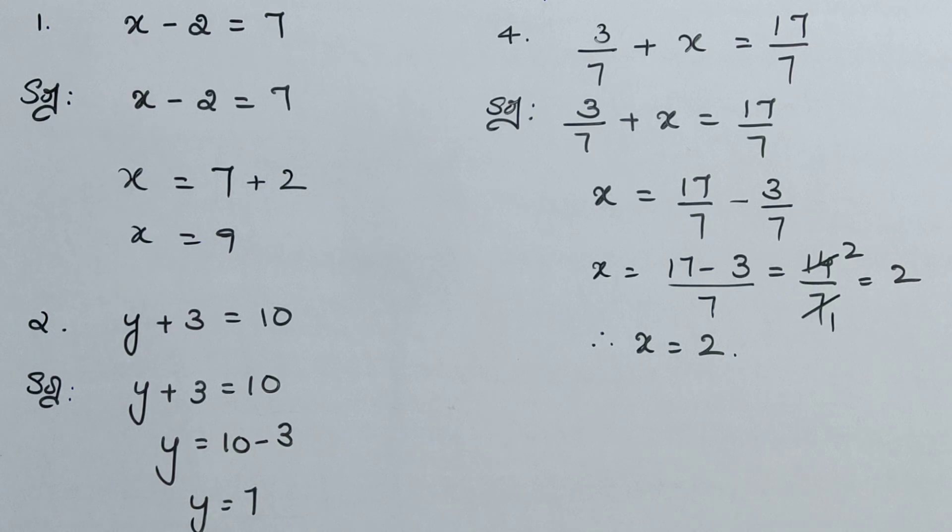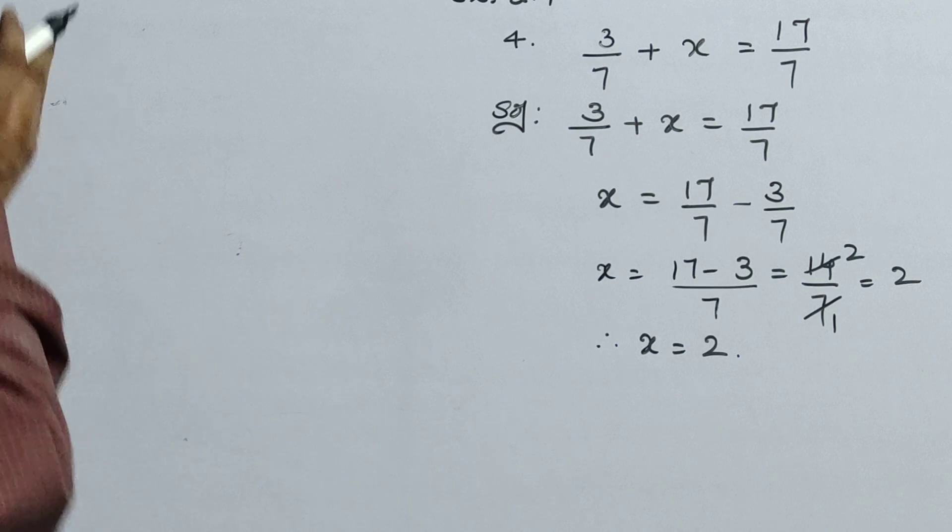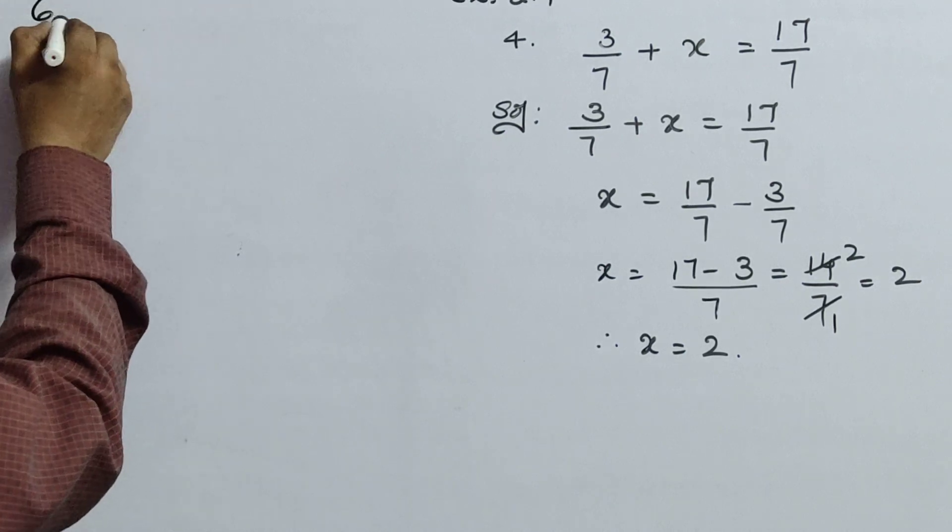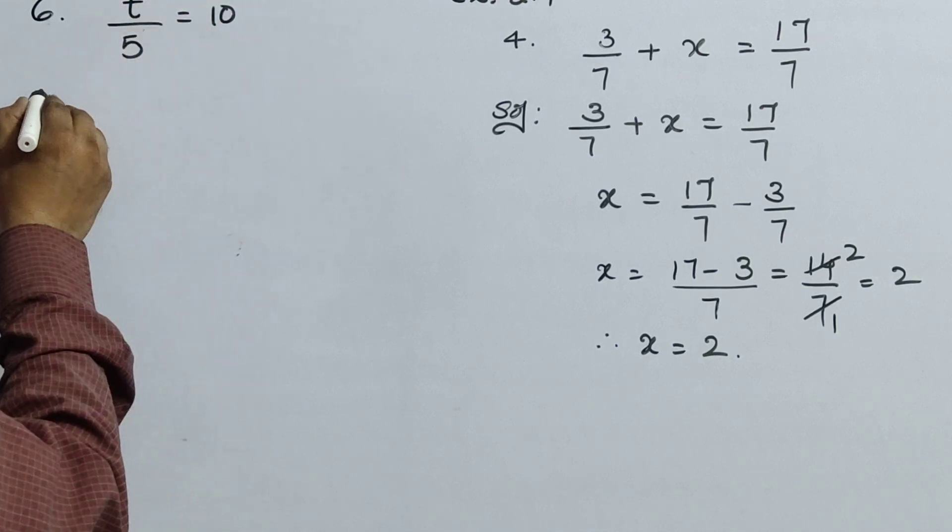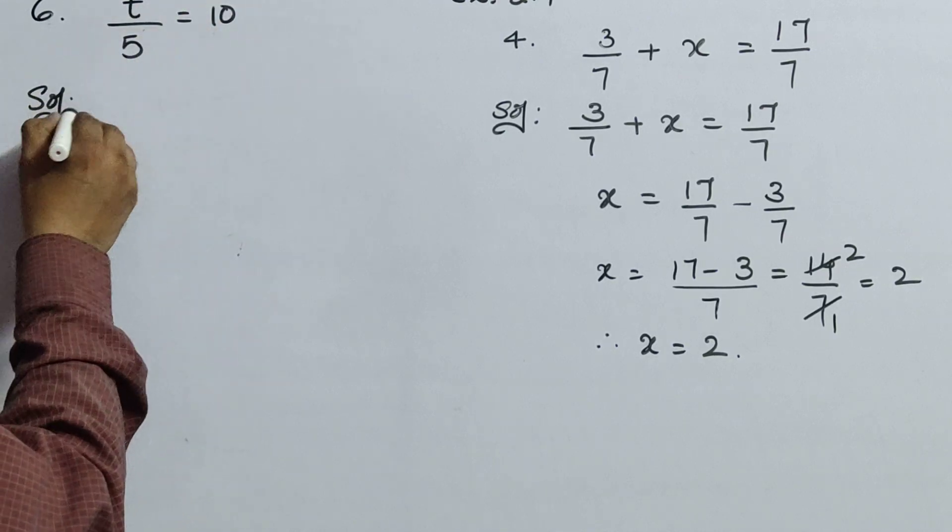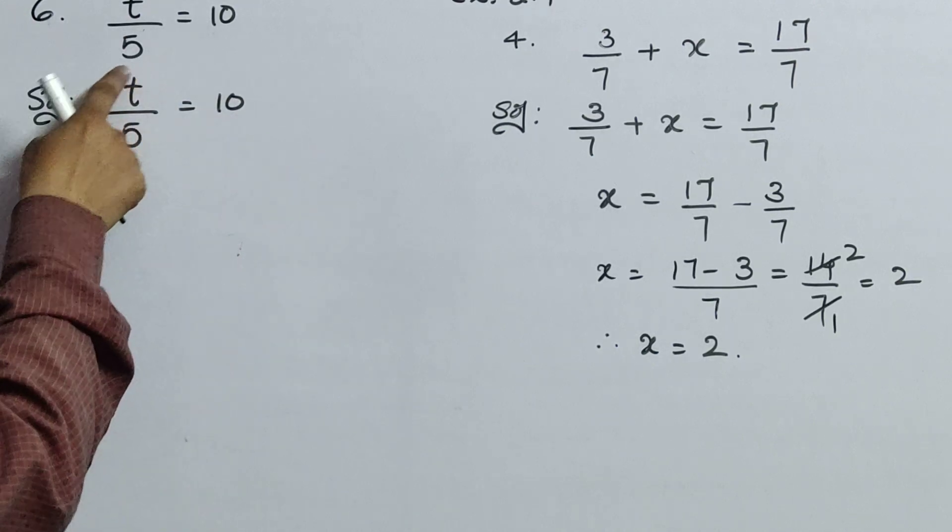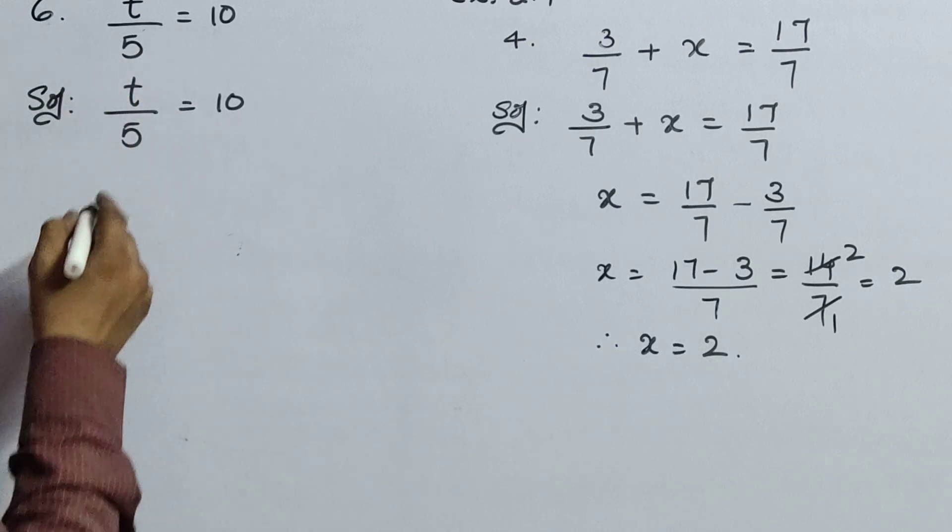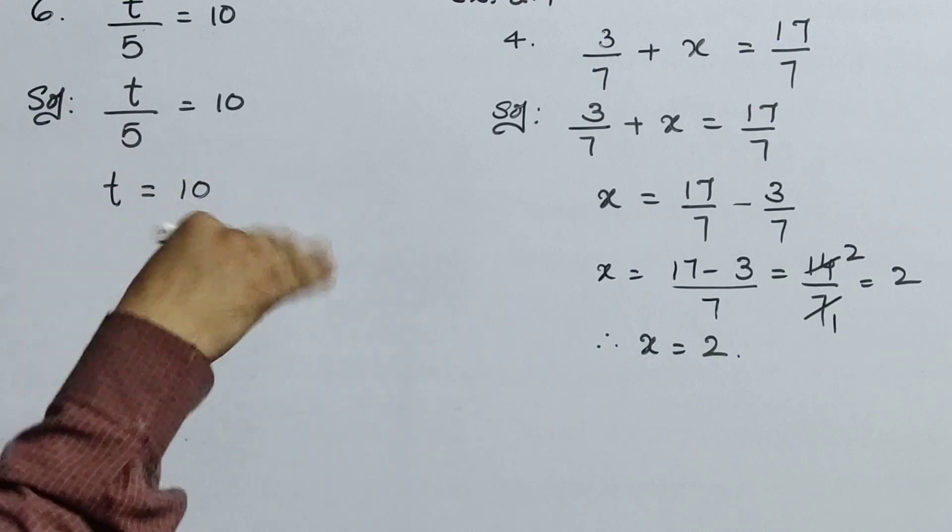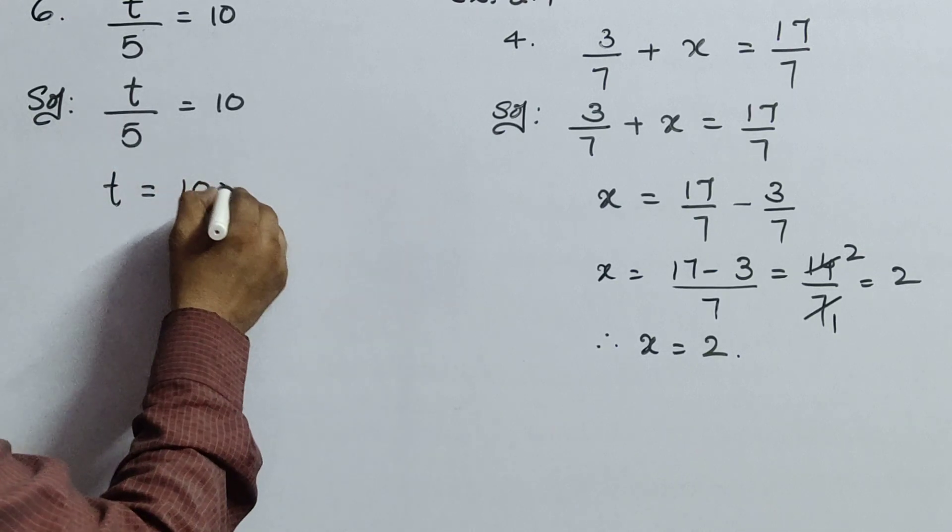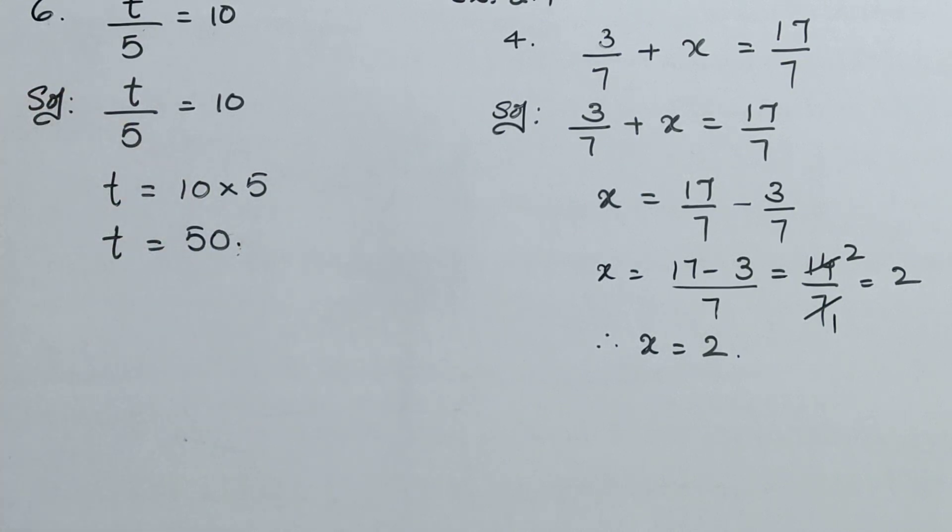Similarly we will go for the next sum. Now see the sixth sum children. T by 5 equals to 10. So first write solution: t by 5 equals to 10. If you clearly observe, it is only one term, t by 5. Now t equals to 10. This is division, you can go that side means that's into. So into 5. T equals to 10 times 5 is 50.